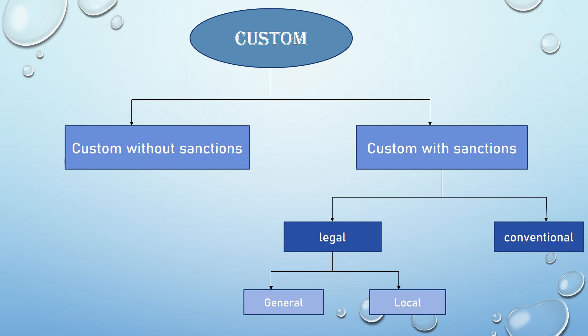Customs with sanctions may further be divided into legal custom and conventional custom. Legal custom is a custom whose authority is absolute — it possesses the force of law and is recognized and enforced by courts. Legal custom is further divided into two types: general custom, which prevails throughout the territory of the state, and local custom, which is applicable to a part of the state or a particular region of a country.